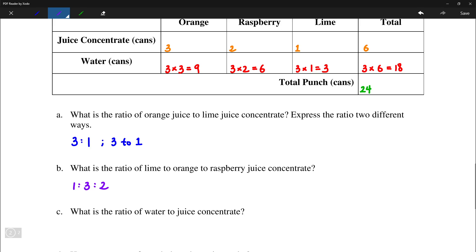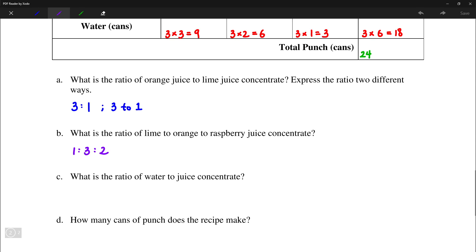Ratio of water to juice concentrate. Now there's two different ways of looking at this. We can look at the totals. So there were 18 cans of water to 6 cans of juice in the table, which if we divide both of these numbers by 6, we'll get 3 to 1. That was also mentioned in the question. That is 3 cans of water to 1 can of juice concentrate.